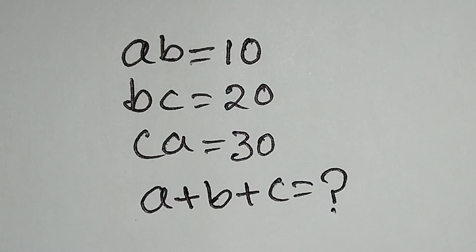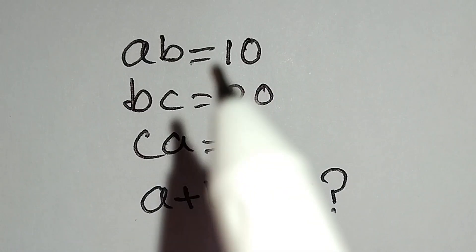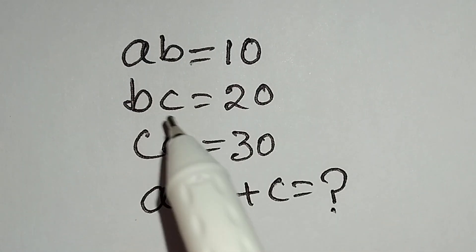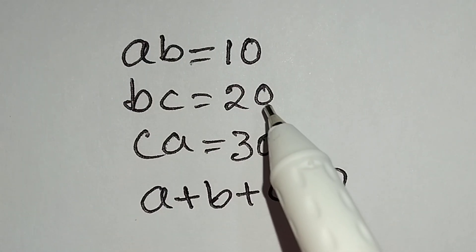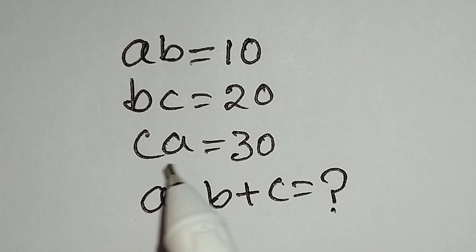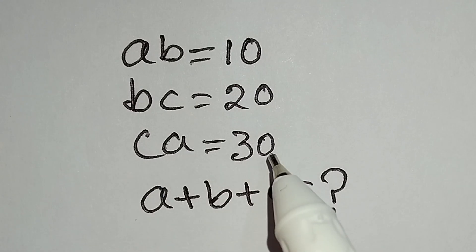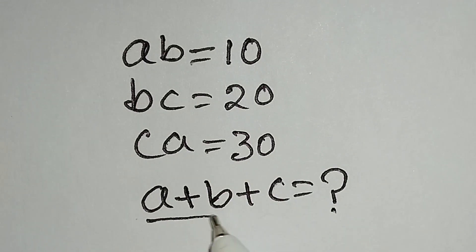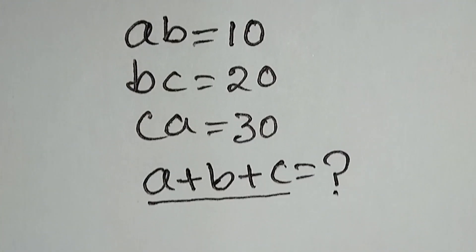Hello friends, this is a nice math problem. AB is equal to 10, BC is equal to 20, and CA is equal to 30. We have to find the value of a plus b plus c. So let's start.